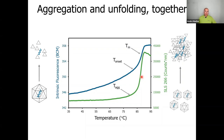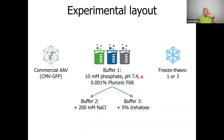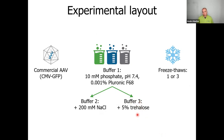Now let's look at the experiment we'll focus on today. We used a commercially available AAV preparation purchased from a Bay Area company, with a cytomegalovirus promoter controlling GFP — a typical standard transgene. We had it in three buffer conditions: Buffer 1 is a pH 7.4 phosphate buffer with some poloxamer; Buffer 2 adds 200 millimolar sodium chloride to Buffer 1; and Buffer 3 adds 5% weight-by-volume trehalose. I'll refer to these as the phosphate, sodium chloride, and trehalose buffers. We then put the AAV through one or three freeze-thaw cycles.